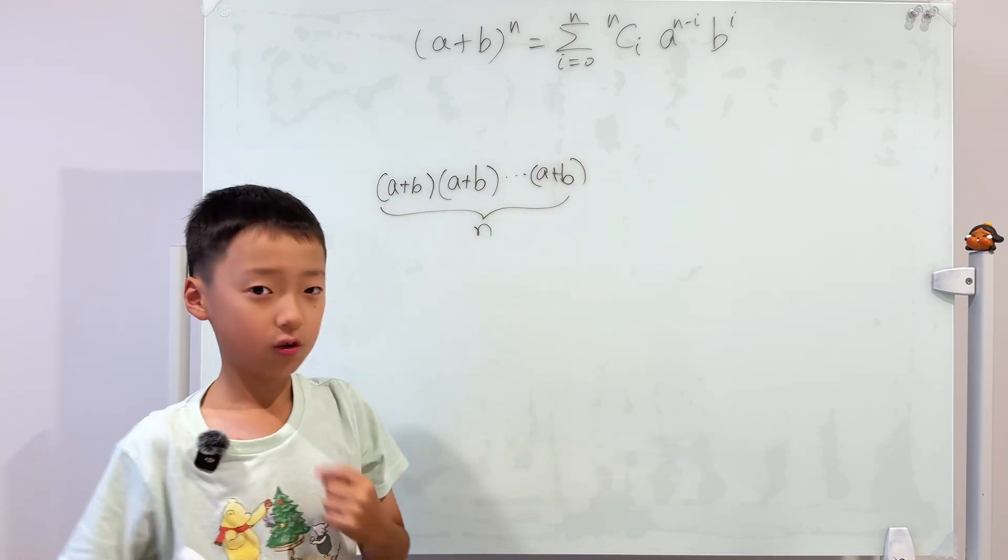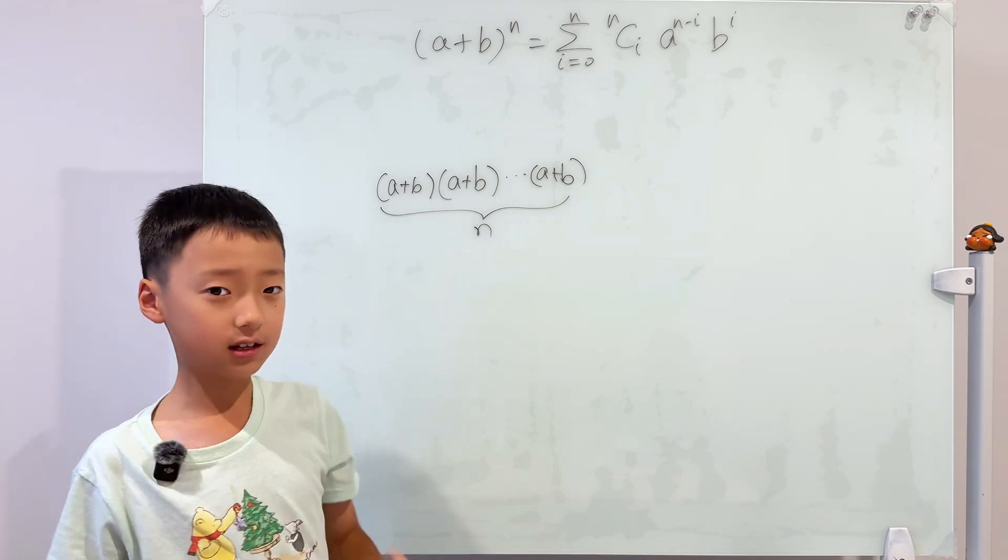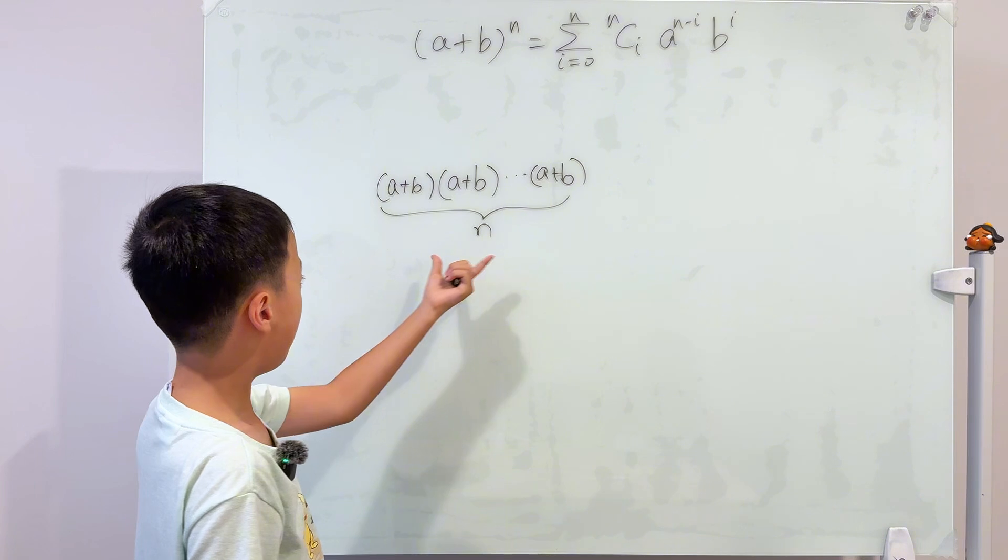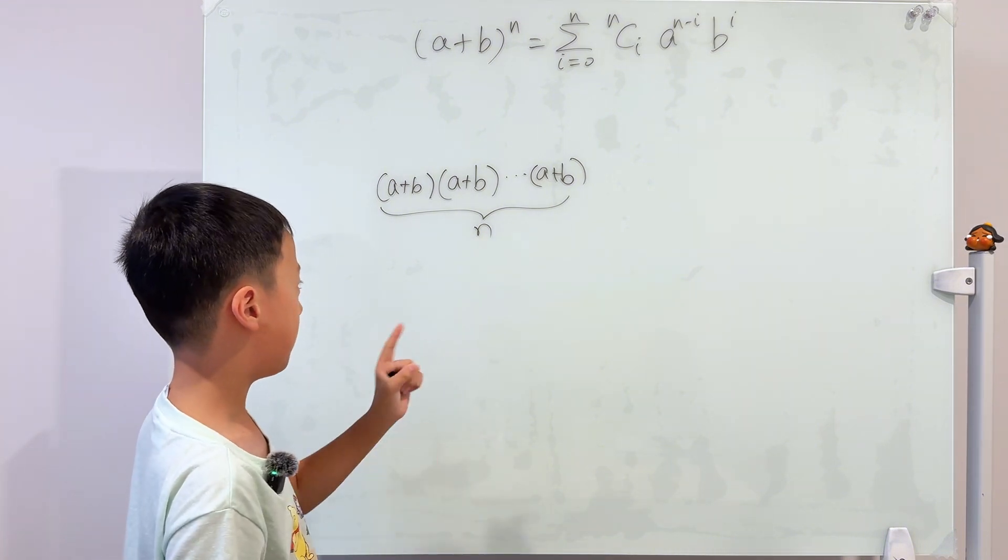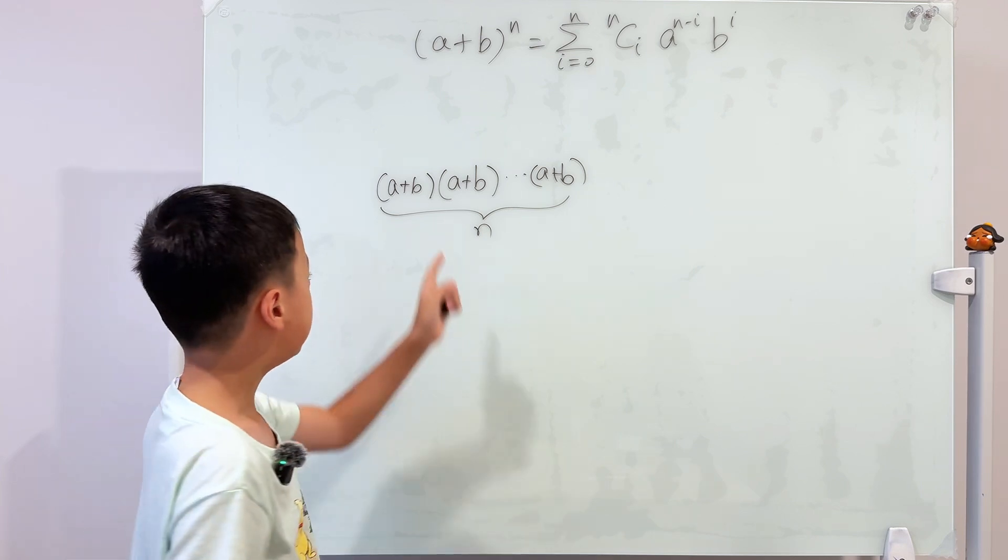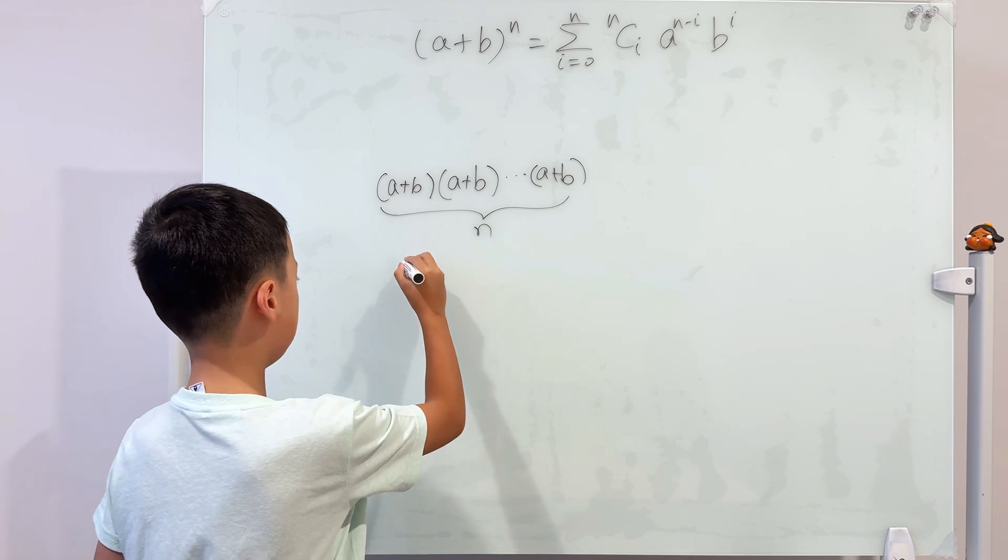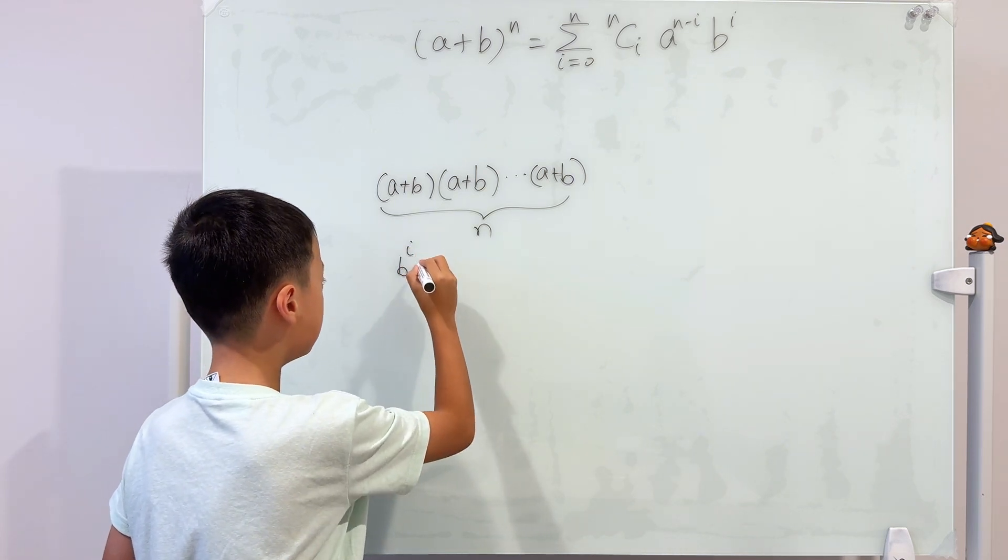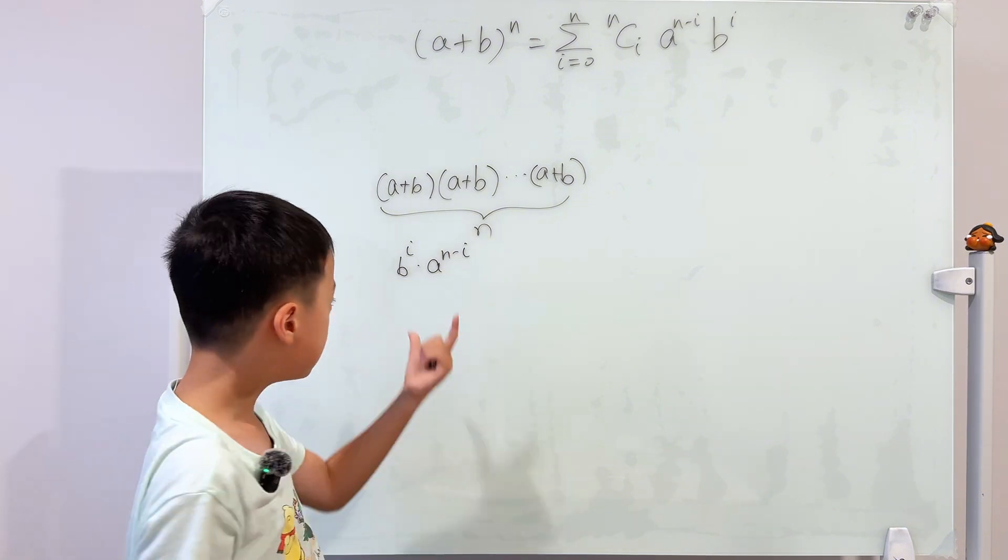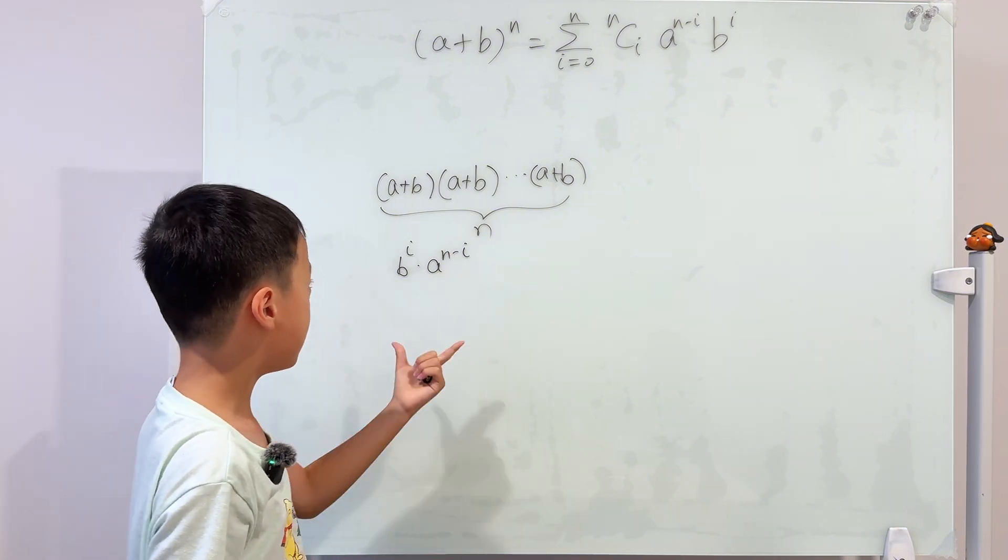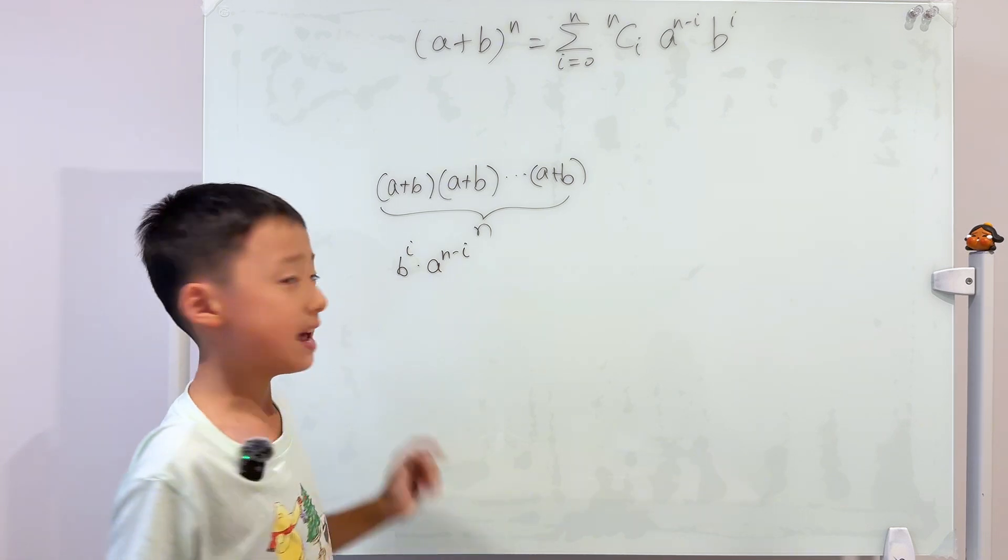To get this, all we need to do is we can take out i number of b's from the n brackets. So then it will become b to the power of i, and the a power will have to be n minus i. So then it will become b to the power of i times a to the power of n minus i. We can see how many ways we can make this, so we know that it's just c n i.